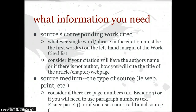So, what information do you need when thinking about how to internally, parenthetically, cite your sources? You have to think about the corresponding works cited, which we've already done — once you remove your annotations from your annotated bibliography, there you go. The most important thing is that whatever single word or phrase in the citation must be the first word in the left-hand margin of your works cited. If it's the author's last name, great. If it's the first three words of a title because there is no author, fine. Whatever you see first on your works cited entry is going to be within the parentheses of your internal citations.